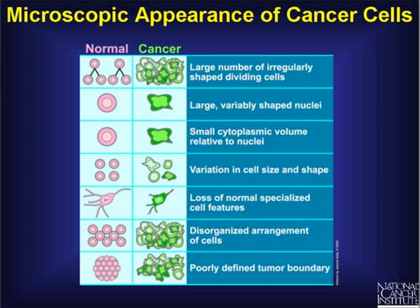An important part of the pathologic finding is staging and grading. Stages of cancer are 1 through 4, and there is also TNM staging. Tumor grades are based on the pathology of the cell: how quickly it is dividing, how large the nucleus is, the cytoplasm-to-nucleus ratio, the variation in cell size and shape between cells, whether cells retain their specialized features, whether cells are organized, and whether there is a tumor boundary.